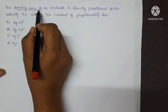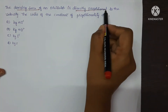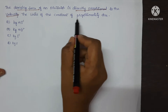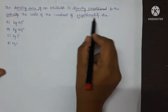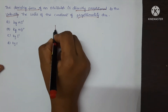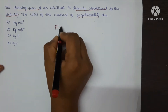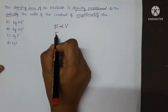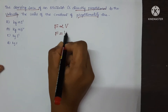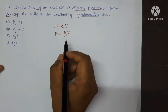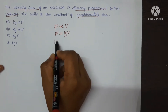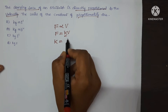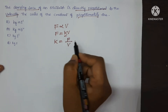The damping force of an oscillator is directly proportional to the velocity. Find the unit of the constant of proportionality R. Force is directly proportional to velocity, so F is equal to KV. Here K is the constant of proportionality, so K is equal to F upon V.